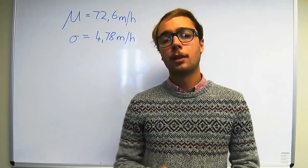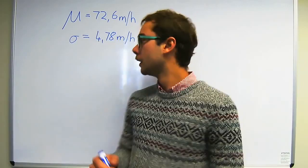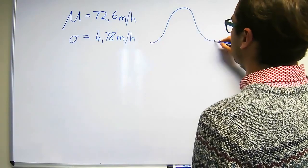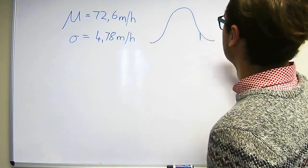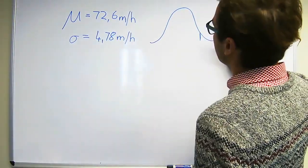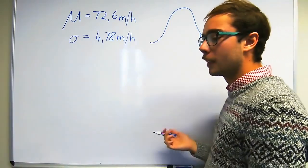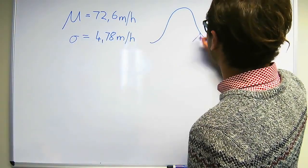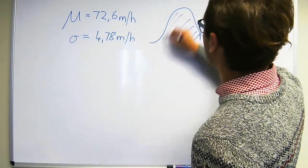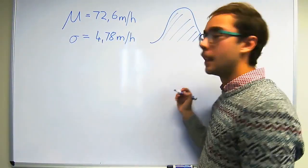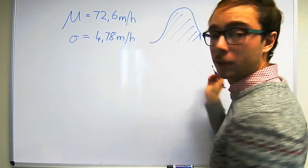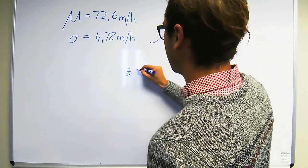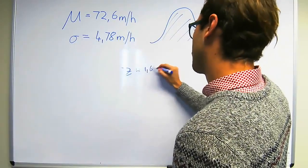They want to know how fast do the fastest 5% of passenger vehicles travel. If we quickly draw our normal distribution over here, they basically want to know what is the speed that the fastest 5% travel at. Instinctively you might think that you have to find 0.05 in your Z-table. But in actual fact, what you want to find is 0.95. Because at 0.95, that is the point where you'll find the fastest 5%. So if you go and find the 0.95, you'll find that that Z-value is 1.65.